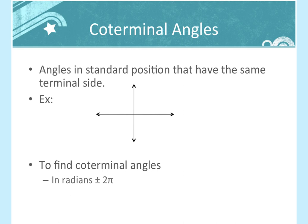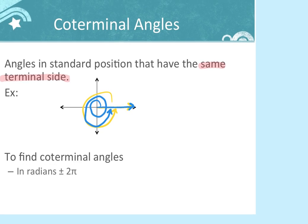Coterminal angles are defined as angles in standard position that have the same terminal side — they start at the same spot and end at the same spot. Going around one more time gives a coterminal angle. For example, 30 degrees and 390 degrees start and end at the same spot; those are called coterminal angles.